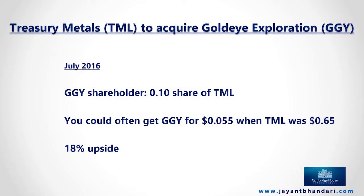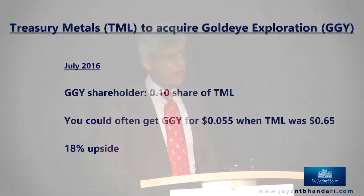This was another deal: Treasury Metals was acquiring a company called Gold Eye Exploration, and the math was extremely simple — 0.1 share of Treasury for each share of Gold Eye. When Treasury was selling for 65 cents, Gold Eye was often trading at 5.5 cents, giving you an arbitrage upside of 18%. This is a relatively risk-free trade.